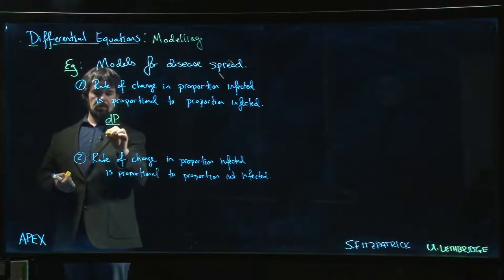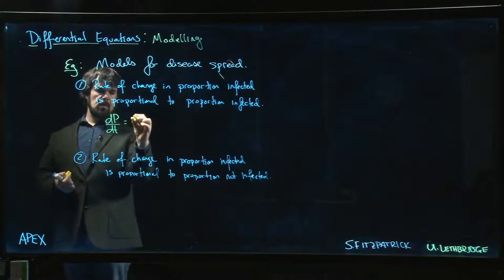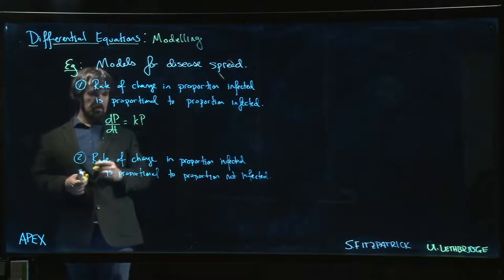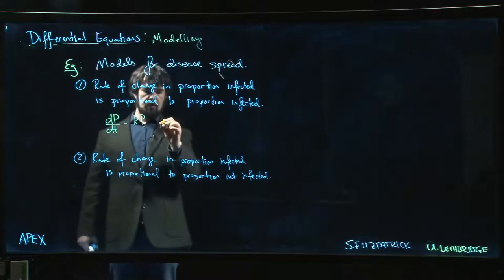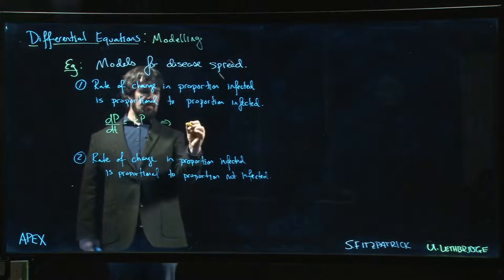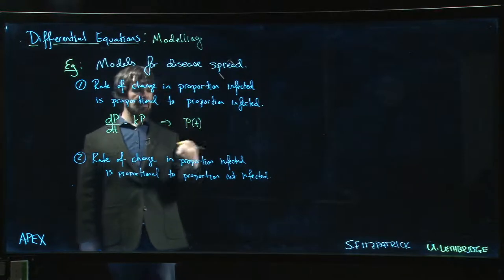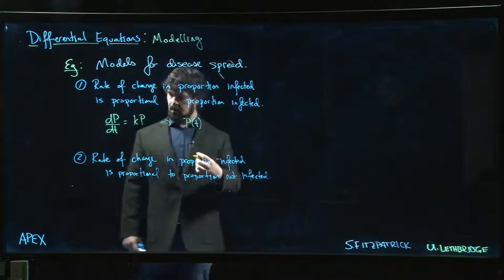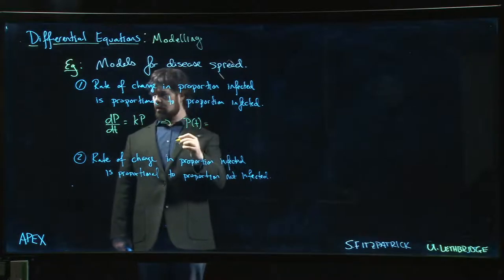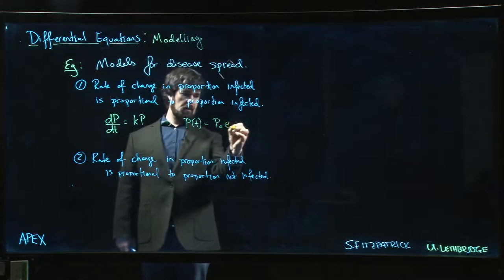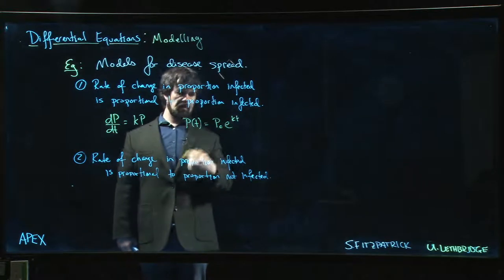The rate of change in that proportion is some multiple of the current proportion, which means that as a function of t, the proportion of the population that's infected, or the percentage if you want to think of it that way, looks like an initial proportion times e to the kt. This is our exponential growth model.